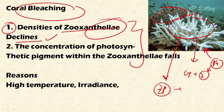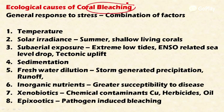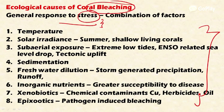Coral bleaching is caused by various reasons including sedimentation, higher temperature, irradiance, and release of freshwater into the ecosystem. The ecological causes of coral bleaching represent a general response to various stresses, and bleaching may occur due to a combination of factors, which include temperature variance, solar irradiance, sub-aerial exposure, sedimentation, freshwater dilution, inorganic nutrients, xenobiotics, and epizootics.